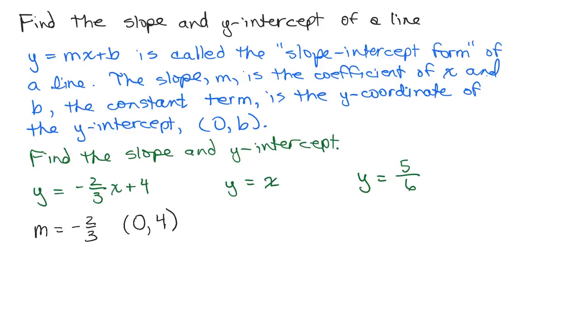What about this one, y equals x? It doesn't quite look like it's in that form, but it can be written so you can see m and b. You could think of it as 1x plus 0, y equals 1x plus 0.